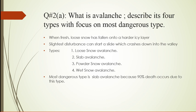The four types are: Loose Snow Avalanche, Slab Avalanche, Powder Snow Avalanche, and Wet Snow Avalanche. Loose Snow Avalanche is when ice slightly affects the harder ice. Slab Avalanche is when a whole slab comes down and it is the most dangerous. The most dangerous type is Slab Avalanche because 90% of deaths occur due to this type. This Slab Avalanche occurred in 2011 in Pakistan where more than 150 personnel were killed.